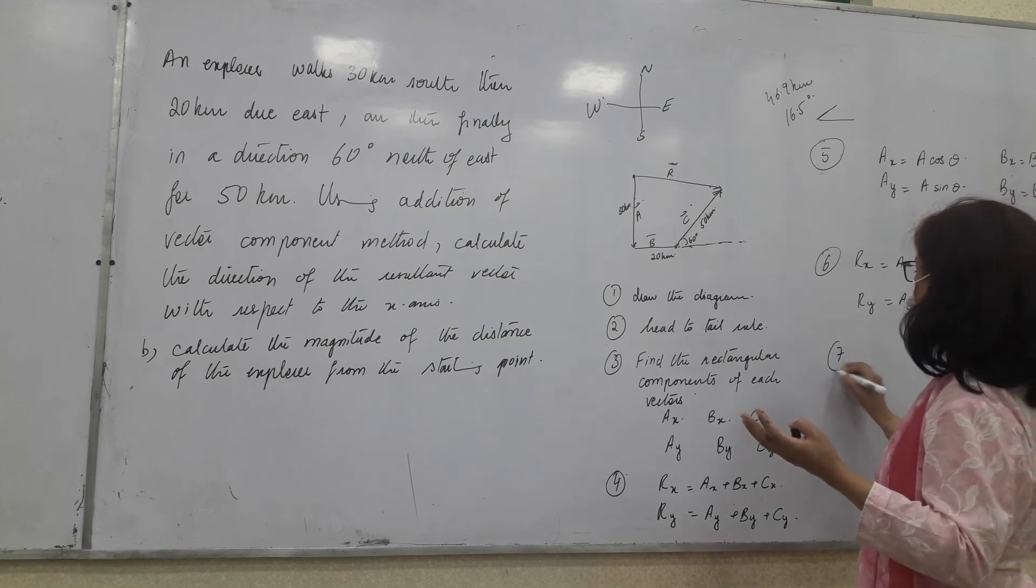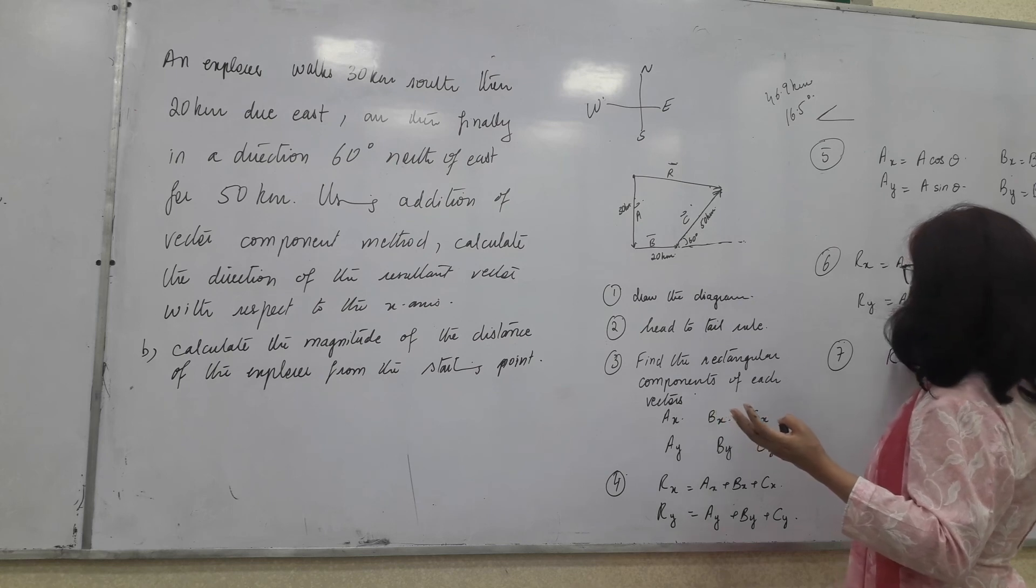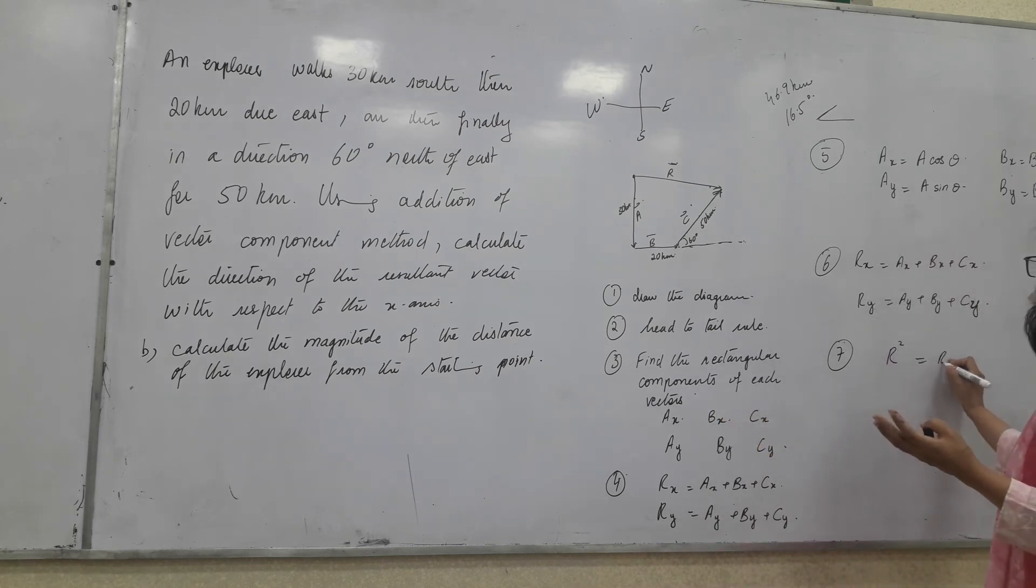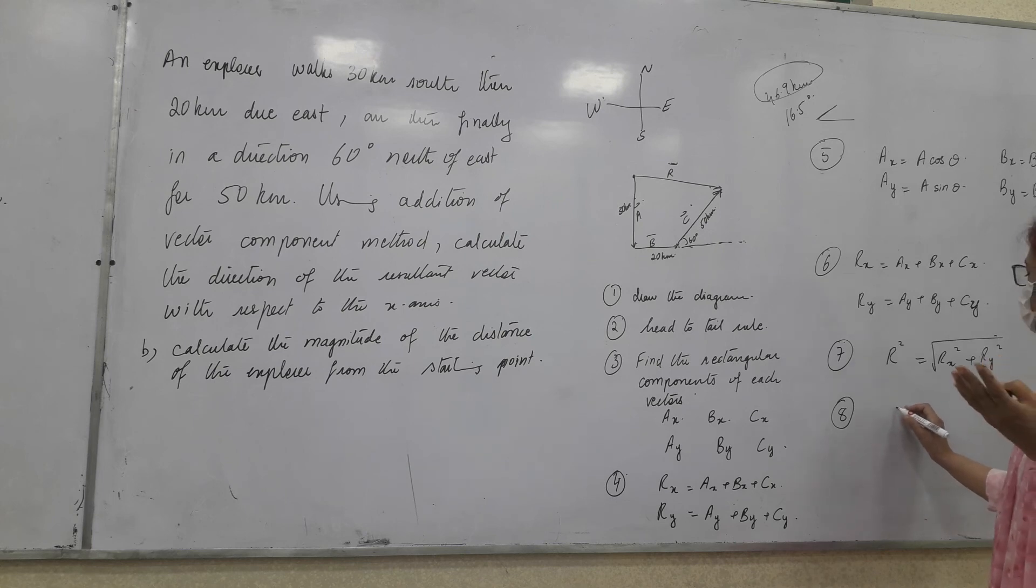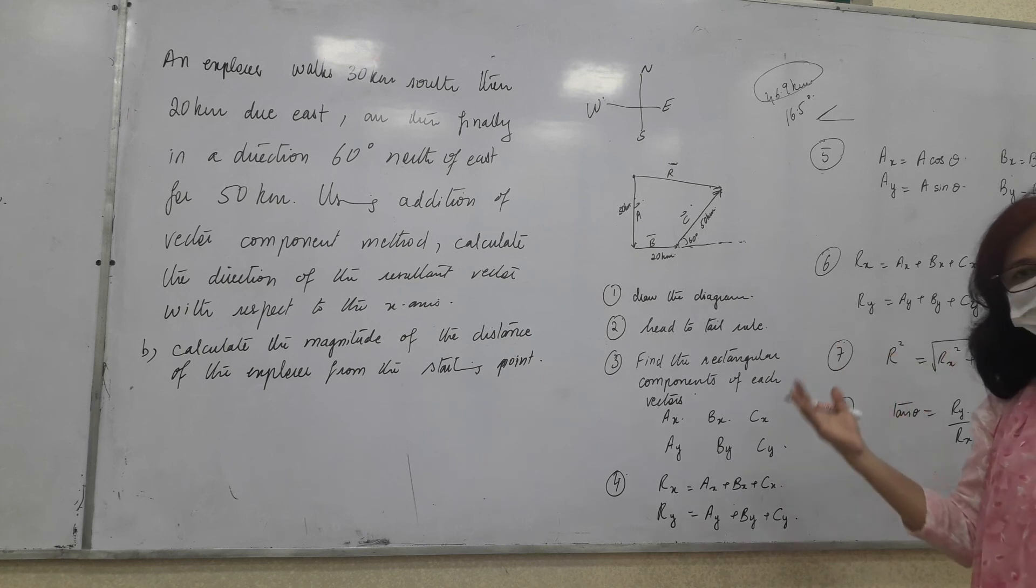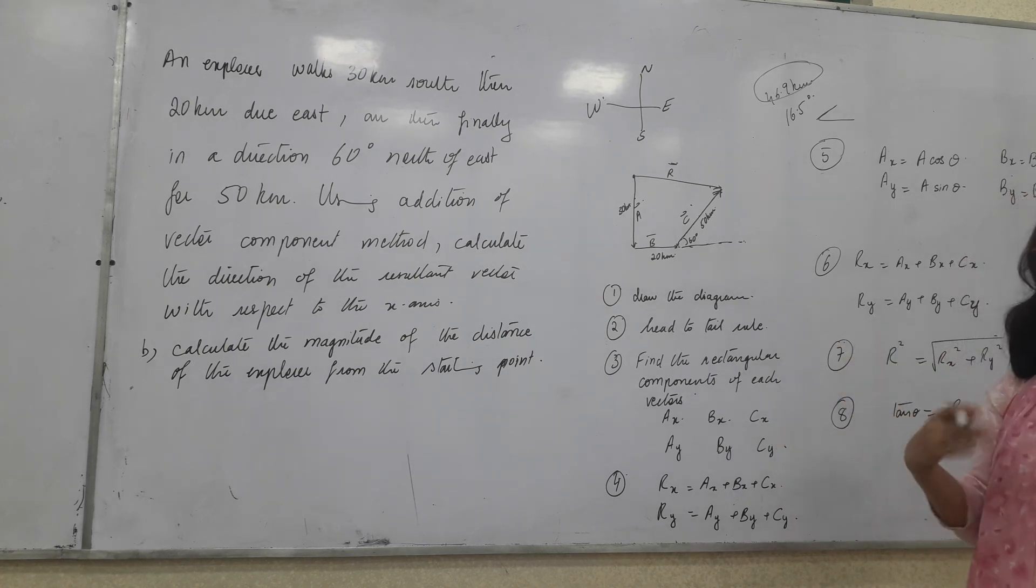We will put both values in a formula. R is equal under root. This is Pythagorean theorem. Right? R squared is equal to Rx squared plus Ry squared under the root. And this value comes out to be this. And then, what's the next step? For finding the direction, we put tan theta is Ry divided by Rx. All these formulas are in your book. We have covered them in detail previously when we were studying this chapter. And you will get the answer which comes out to be 16.5.